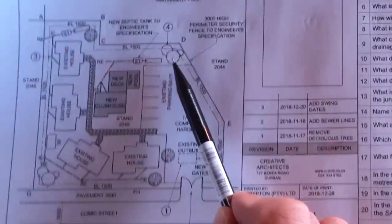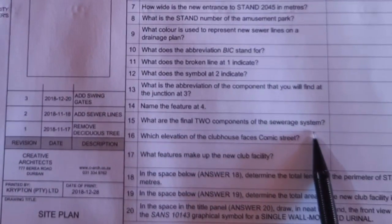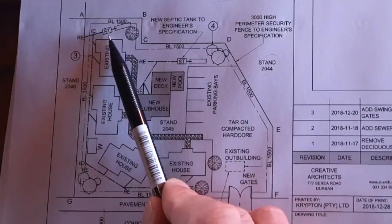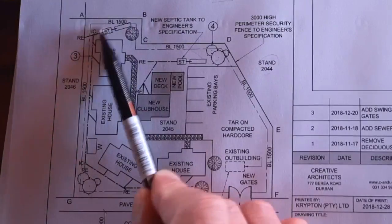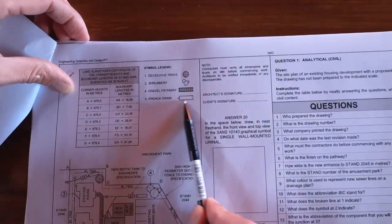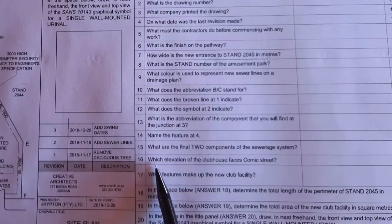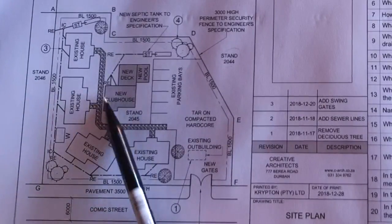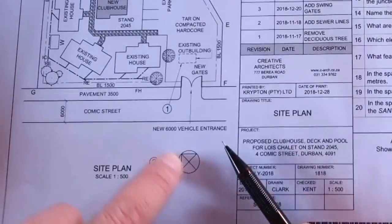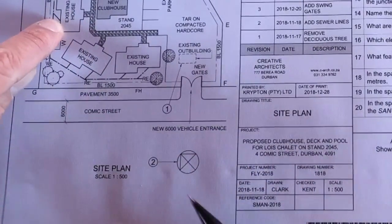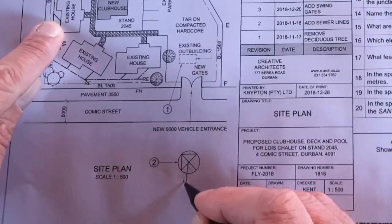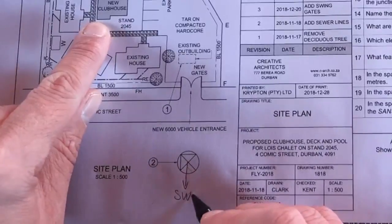What feature is at indicator four? From the legends it says 'Shrubbery.' What are the final two components of the sewer system? The sewer line ends at a septic tank and a French drain — also taken from the legend. Which elevation of the clubhouse faces Comic Street? Using the north arrow: Comic Street is to the south-west. North is clearly shown, so south is opposite, and the street aligns diagonally — making it south-west.